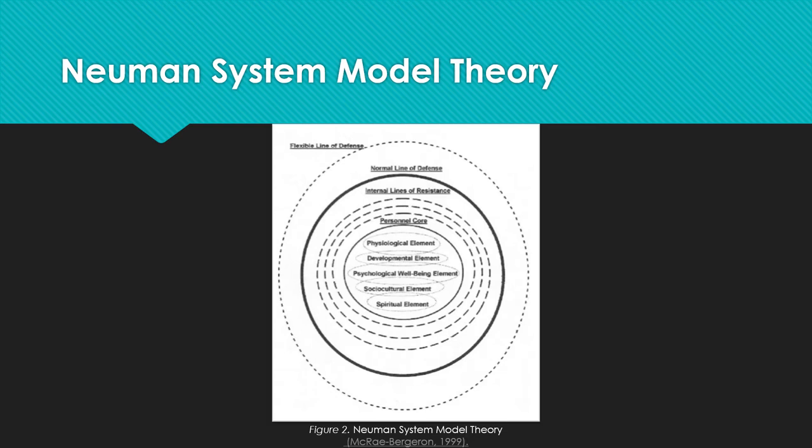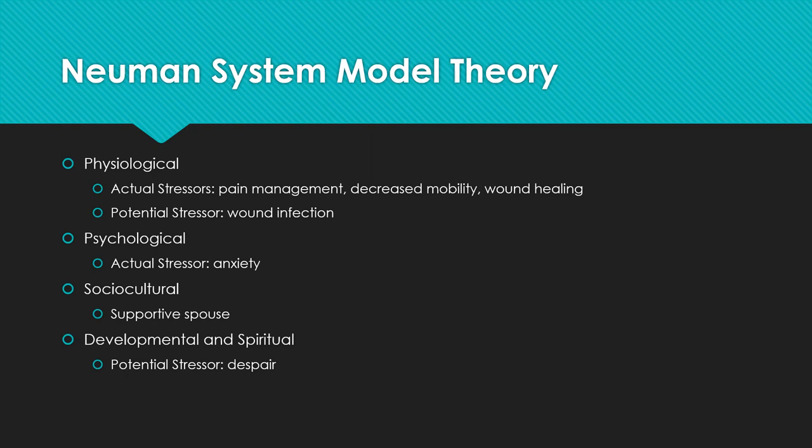The core structure of survival factors is protected by internal lines of resistance that, when effective, adapt to stressors and establish the stable state of the client's health, termed the normal line of defense. Beyond the normal line of defense is the flexible line of defense. Its strength fluctuates and is the buffer to the normal line of defense. Stressors have the potential to disrupt the normal line of defense, and nursing is required when the patient's flexible line of defense is unable to protect the normal line of defense.